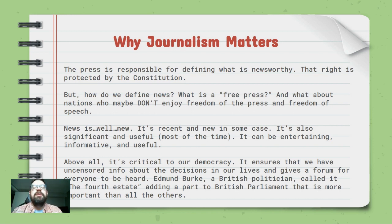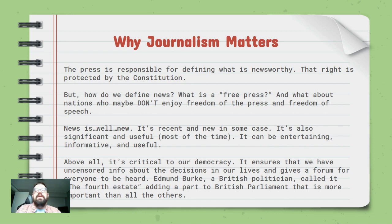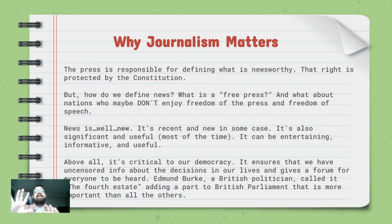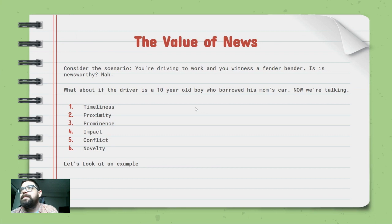Edmund Burke, a British politician, called journalism the fourth estate. Think of it like how American Congress has two houses — the press acts as another check on power. News is there to keep everyone in line, to inform the public about what's going on, and to serve as another set of checks and balances on the democratic process.